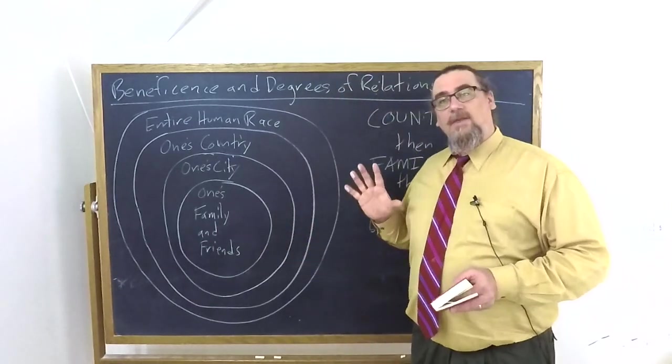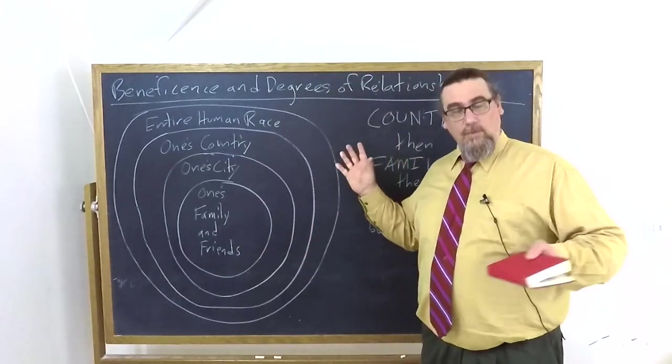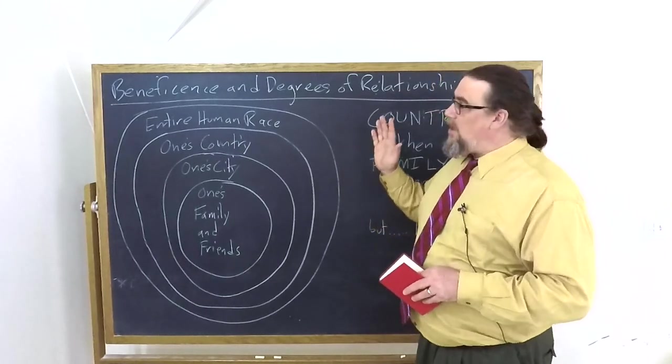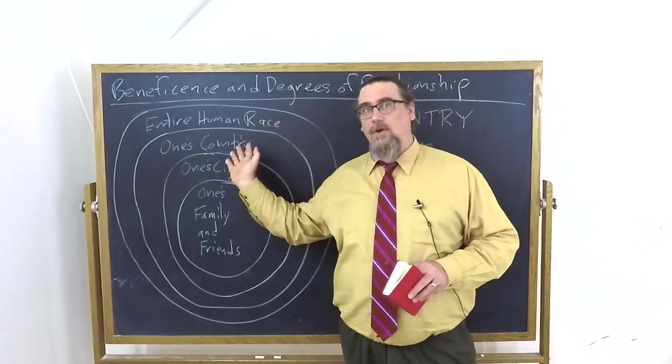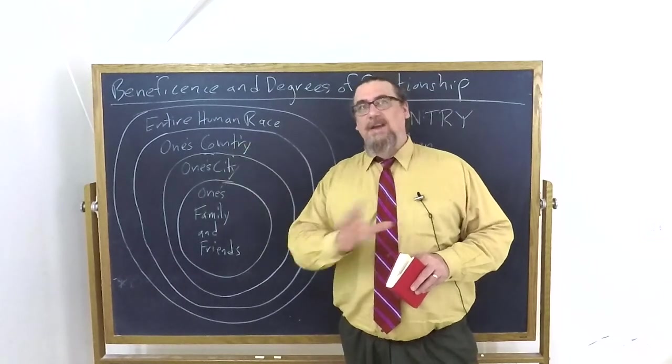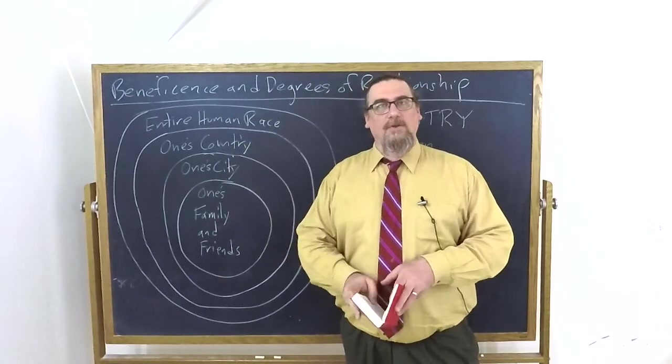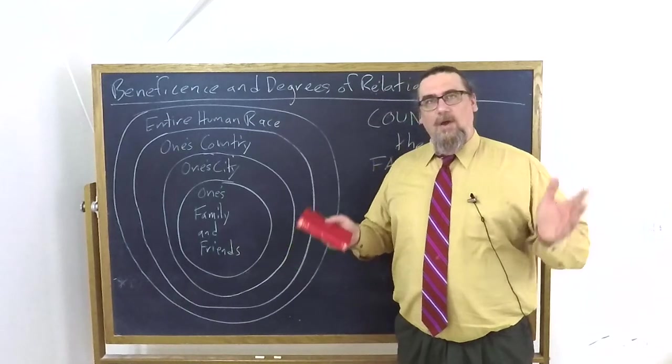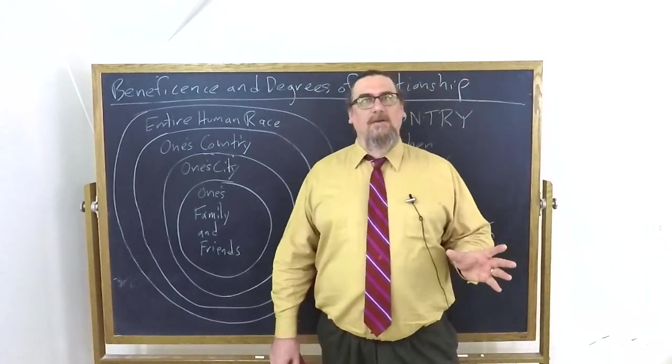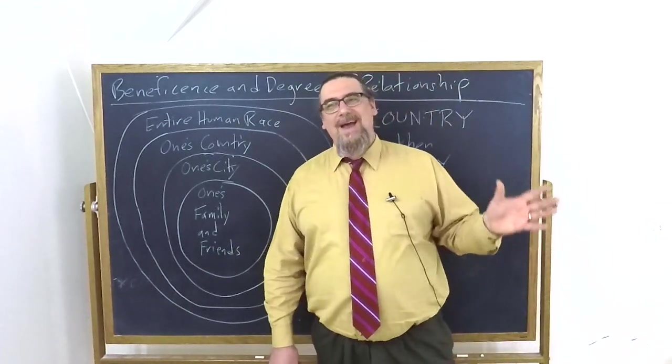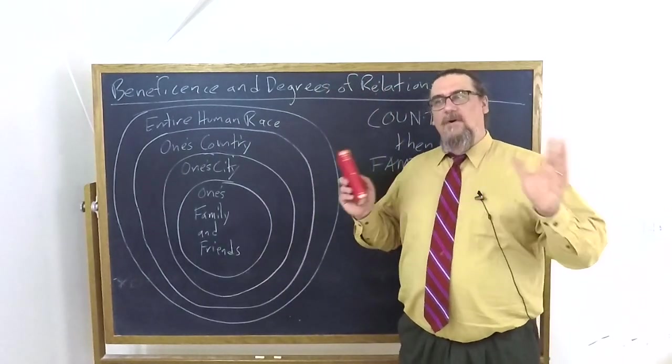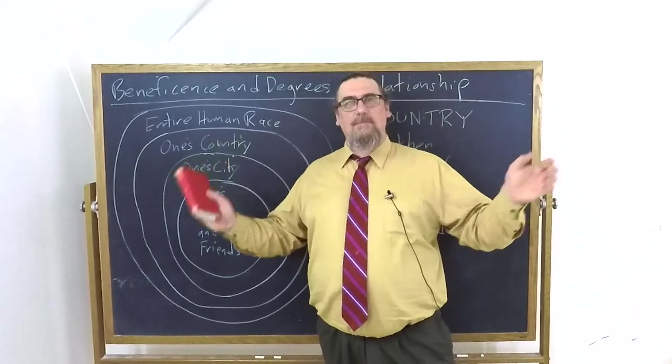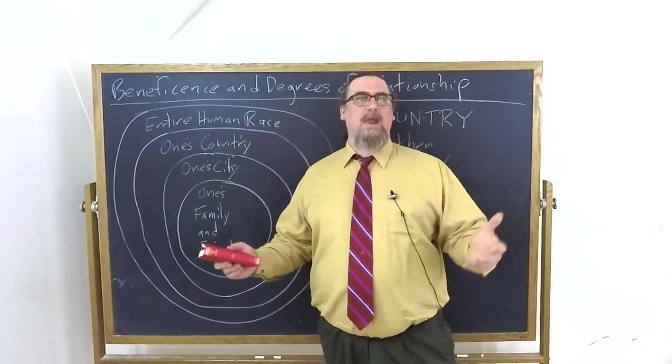And notice that the Stoics, which is what he's summarizing here, they think that we do have some sort of relationship with the entire human race, the entire species, regardless of where people are from, regardless of what language they speak, what religion they may practice, what color their skin may be. All of these fall under the same basic rubric of humanity.